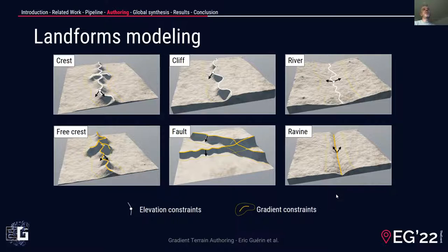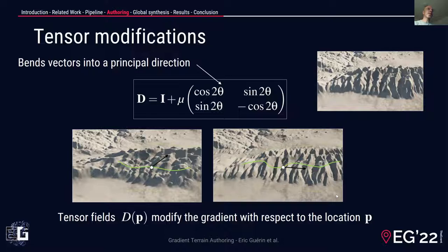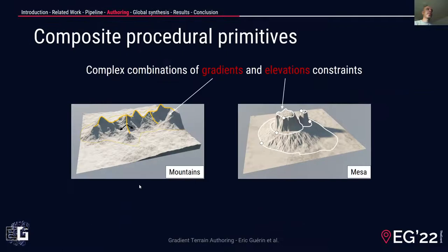Copy and paste operations are usually performed in the gradient domain to obtain seamless blending. Because the gradient representation is a vector field, we can modify it using 2D tensors. The 2D tensor will tend to bend the gradient in a given direction, guided by a theta angle as shown in the equation. This has the effect of orienting the slopes in a given direction. Note that the tensor can vary depending on the position, guided for example by a user brush stroke.